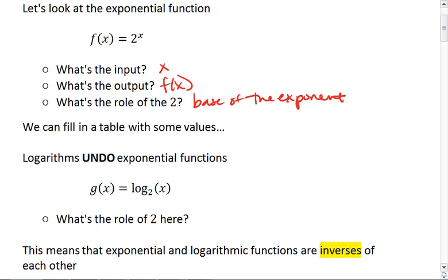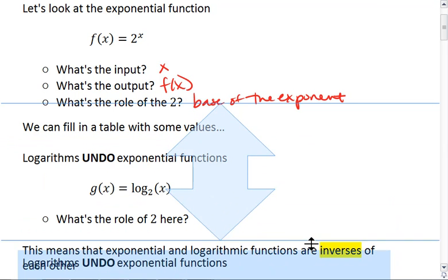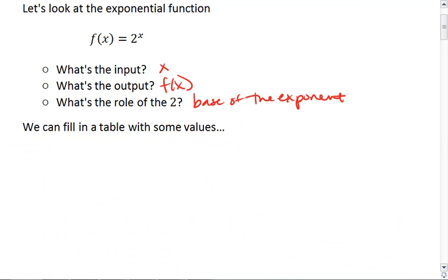If we wanted to, we could fill in a table with some values. We know that if x is negative 1, that means 2 to the negative 1, which is 1 over 2, so f of x would be 1 over 2.